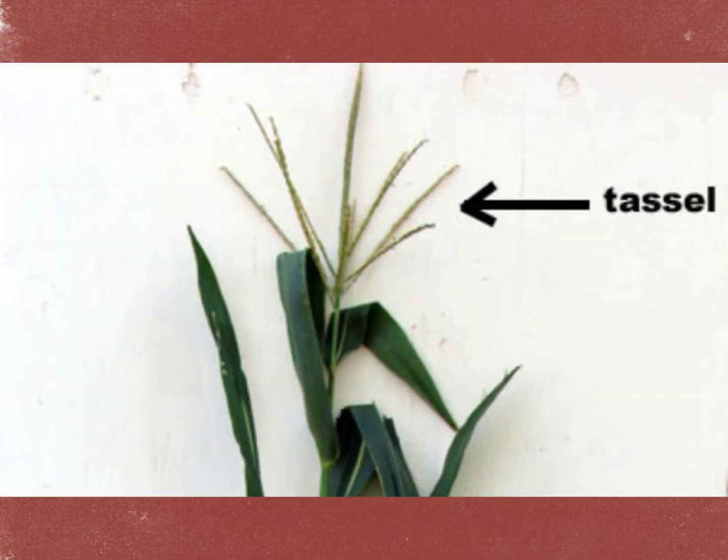The tassel is the male part of the corn plant that contains the pollen. The tassel is located on top of the corn plant.